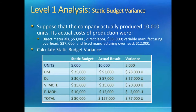Now that we have a static budget, let us calculate static budget variance — this is called level one analysis. Suppose that the company actually produced twice the number of units planned and spent the given costs on production. Static budget variance is simply the difference between static budgeted costs and actual costs. For example, we planned on spending $25,000 on material but actually spent $53,000, so the variance is $28,000 unfavorable. The total column shows that the company spent $77,000 more than budgeted, giving us an unfavorable variance of $77,000.